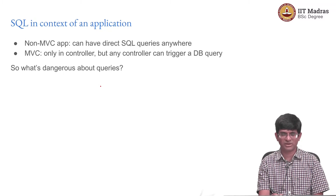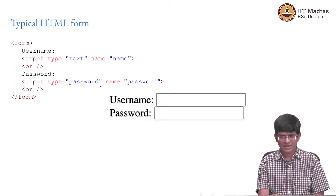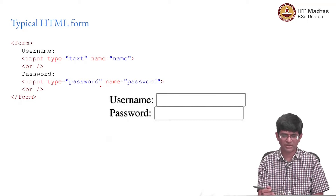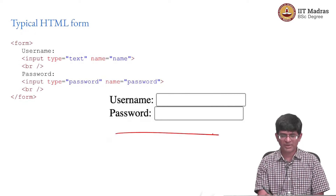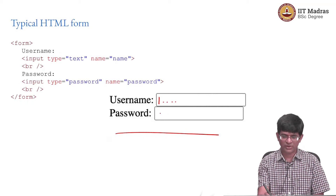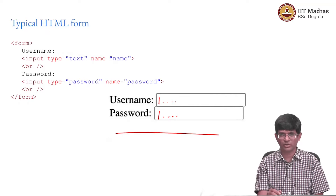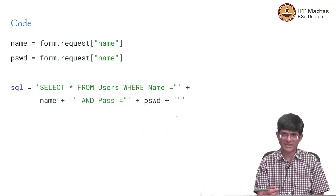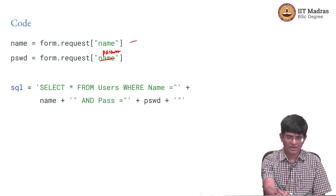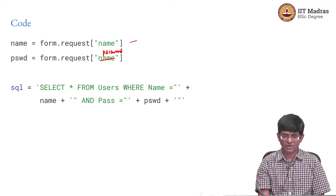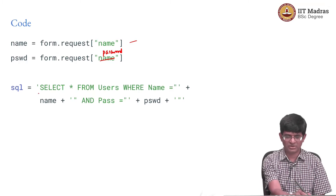So the question becomes: what is dangerous about an SQL query? Take a typical HTML form with input for name and password. Once the user types information and hits submit, you would take the form's request data for name and password and construct a query out of it. If the query is built by just stringing things together using the Python plus operator and concatenating strings, that seems reasonable but can be potentially very bad.